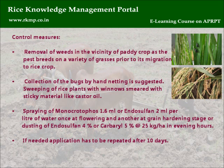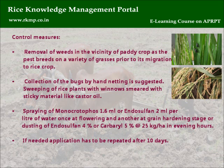Control measures: Remove weeds in the vicinity of the paddy crop, as the pest breeds on a variety of grasses prior to migration to rice. Collection of bugs by hand-netting is suggested. Sweep rice plants with windows smeared with sticky material like castor oil. Spray Monocrotophos 1.6 ml or Endosulfan 2 ml per litre once at flowering and again at grain hardening stage, or dust Endosulfan 4% or Carbaryl 5% at 25 kg per hectare in evening hours. If needed, repeat after 10 days.